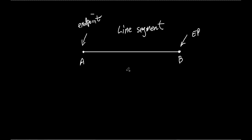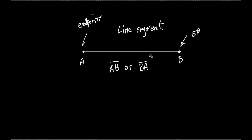Here's how we name a line segment. If the two endpoints are A and B, I put AB with a straight line above it — no arrows on either end. That symbol tells me it's a line segment, with A and B as the endpoints. Unlike a ray where order mattered, on a line segment it doesn't matter which endpoint is first. I could call it line segment AB or line segment BA — either one works.